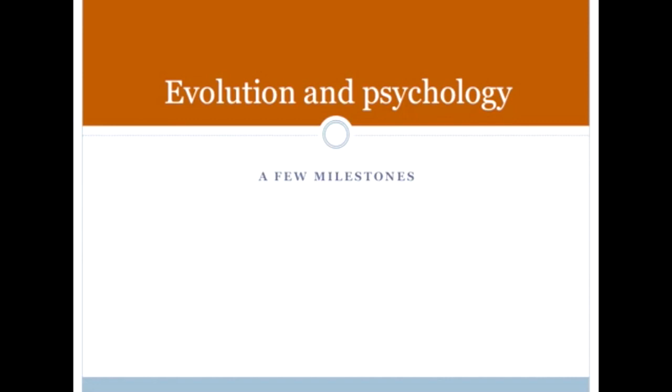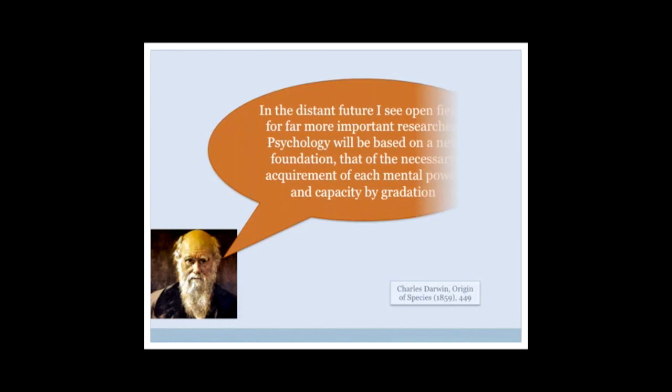Now, of course, there had always been strong links built between the evolution of culture. Darwin had done it. We can see these psychological milestones as we look across history. In Origin of Species, Darwin was talking about, in the distant future, I see open fields for far more important researchers. Psychology will be based on a new foundation, that of the necessary acquirement of each mental power and capacity by gradation. So he's suggesting that his own evolutionary theory, evolution through natural selection, is going to have an impact upon psychology, the understanding of how the human mind functions.